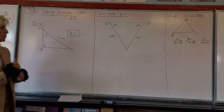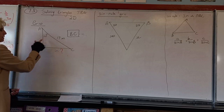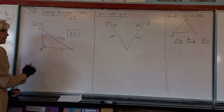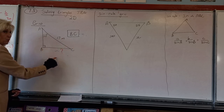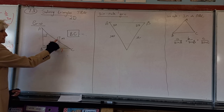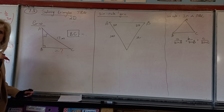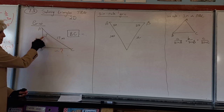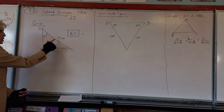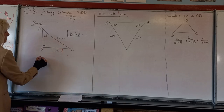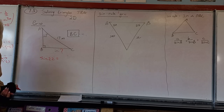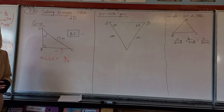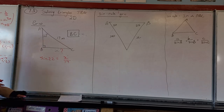So you ask yourself: what's my angle, what's my side, what combination do I have? Those three things — an angle and two sides — tell me which ratio to use. From that angle, this is the hypotenuse and this is the opposite, so opposite over hypotenuse gives me the sin ratio: sin 22° = x/17.